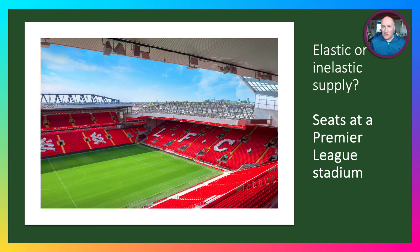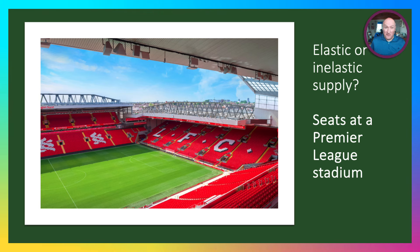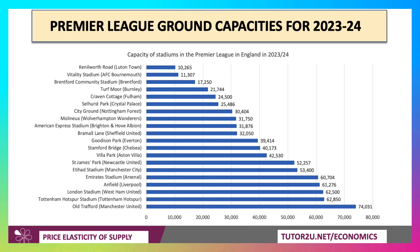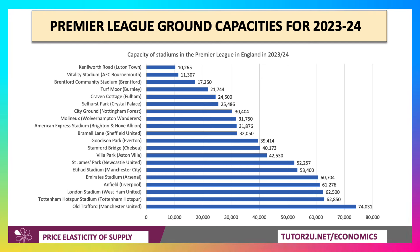What about seats at a Premier League stadium? For any given season, the number of seats is fixed. These are the capacities of Premier League grounds for the 2023–24 season. Kenilworth Road has the smallest capacity and Old Trafford the biggest. If you're a Chelsea fan, Stamford Bridge has a 40,000 capacity — though most of the seats face the pitch, which is a slight design fault.